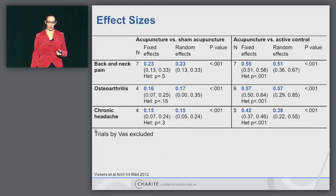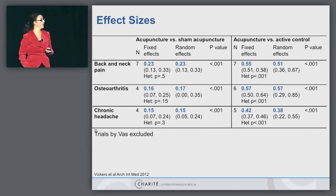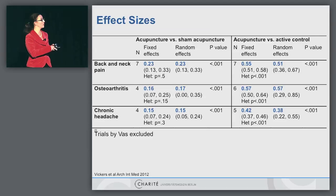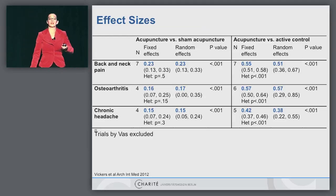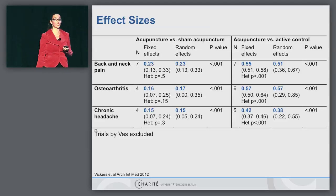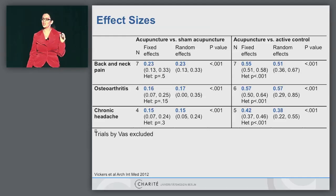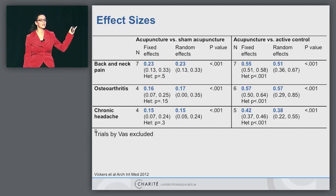Bringing this into one picture: we have acupuncture versus sham acupuncture, and acupuncture versus active control. Effect sizes from both statistical models are shown — the primary model was a fixed effect model. The effect size for acupuncture versus sham is between 0.15 and 0.23, which is statistically significant but small and not usually considered clinically relevant. When comparing acupuncture with active control, effect sizes get bigger and clinically relevant. Note that we excluded trials from Spain, where unusually large effects between acupuncture and sham were seen, to be more conservative — and still obtained these results.